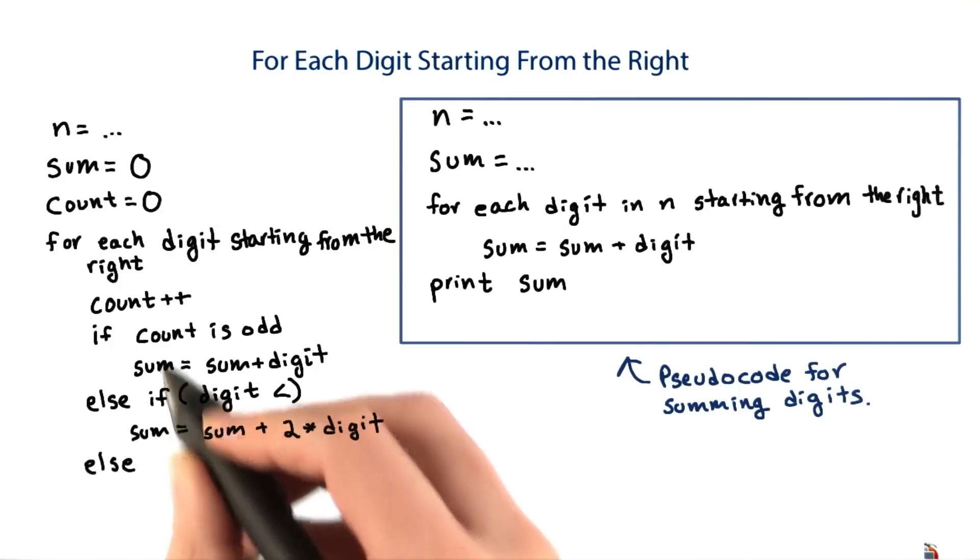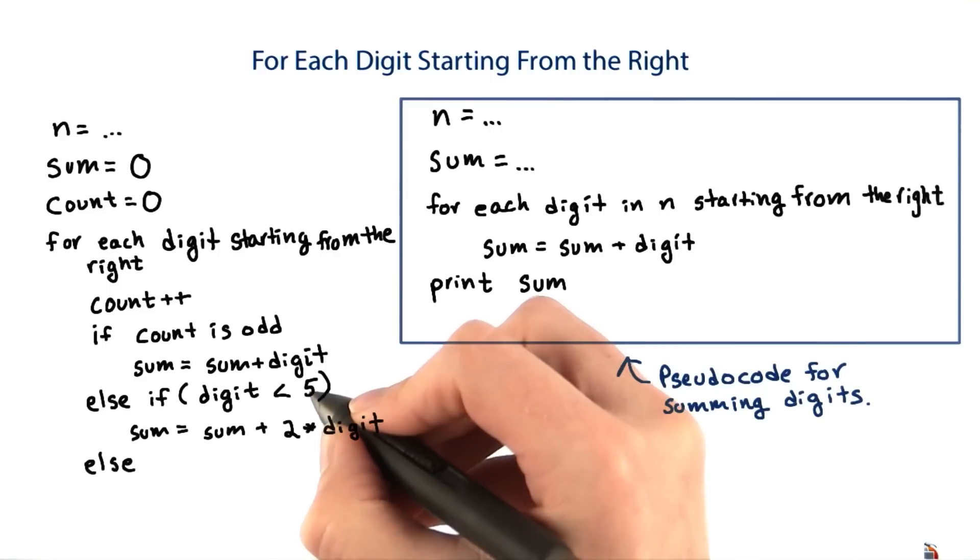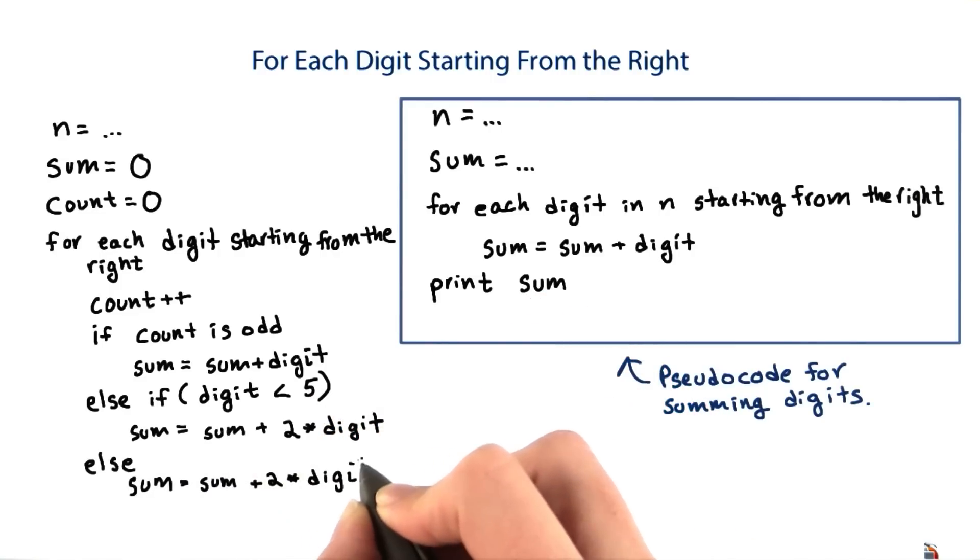Otherwise, if the count is even and the digit is 5 or greater, then we add 2 times the digit to the sum and subtract 9.